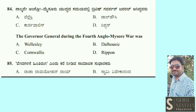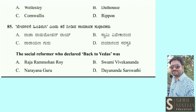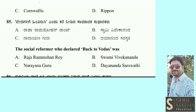85th question: The social reformer who said 'Back to Vedas' was — Raja Ram Mohan Rai, Swami Vivekananda, Narayana Guru, or Dayananda Saraswati? The answer is Dayananda Saraswati. He said this because he believed the Vedas are real knowledge.